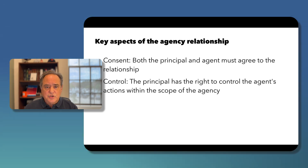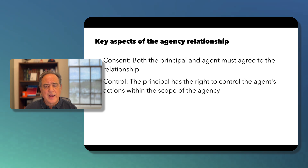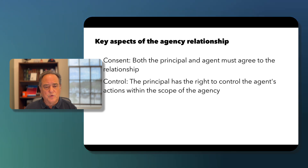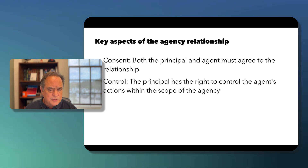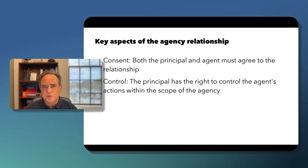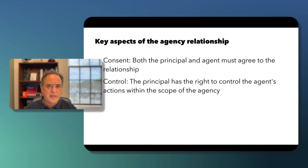Control: the principal retains the right of control — the right to control the agent's actions within the scope of the agency relationship.